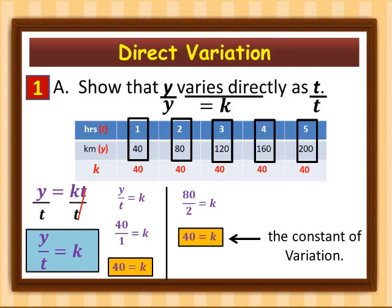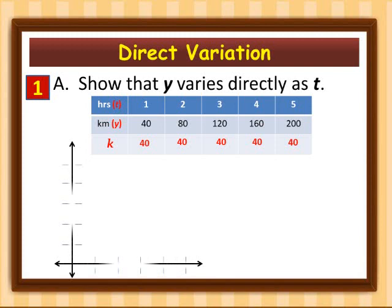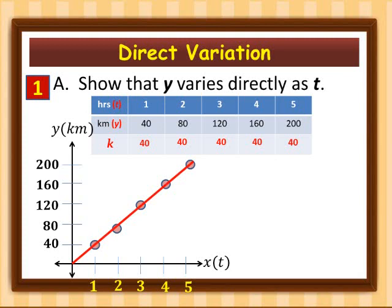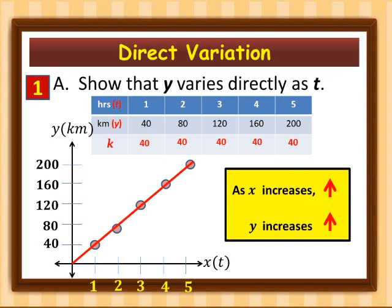Now let's look at the graph of this table. On the x-axis we have time and on the y-axis we have kilometers traveled. Time ranges from 1 to 5 hours and distance from 40 to 200 kilometers. Plotting the points: 1 hour at 40 km, 2 hours at 80 km, 3 hours at 120 km, 4 hours at 160 km, and 5 hours at 200 km. As x increases, y also increases — this is the behavior of direct variation.